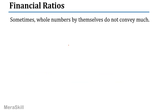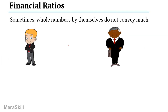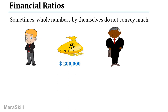Now, financial ratios — why do you need them? Sometimes whole numbers by themselves do not convey much. Let's take an example. Suppose I have two people here: Stuart Lettley and Adam Selye. Both have made a profit of $200,000 and are pretty happy with their results. Can I say they both performed equally well? Is this data enough? Can I say they are both equally efficient and have both made equally good use of their resources?